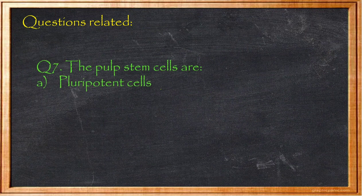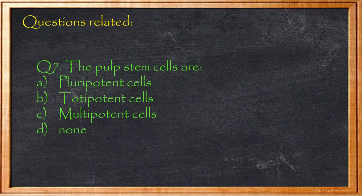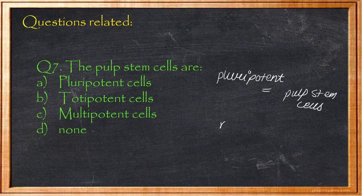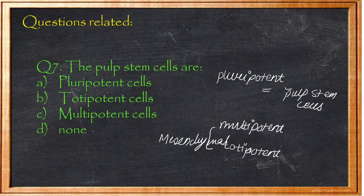Question 7: Pulp stem cells are — A) pluripotent, B) totipotent, C) multipotent, D) none. This is a nuanced question. Reading carefully between the lines: mesenchymal cells in pulp are considered totipotent or multipotent. The pulp stem cells are generally described as multipotent. If you watch the detailed Pulp Stem Cells video, you can answer this more precisely. Remember to read carefully to distinguish between multipotent and totipotent.